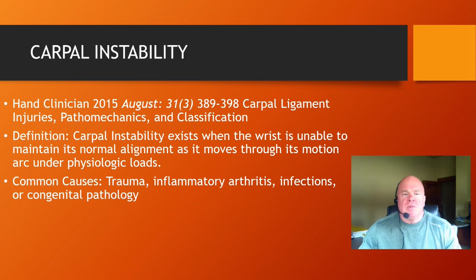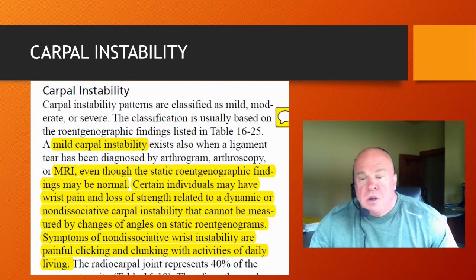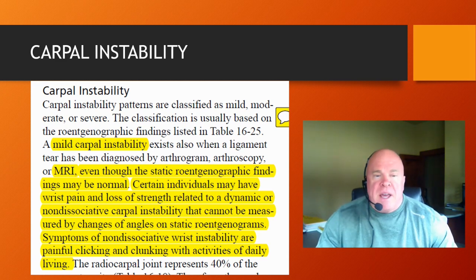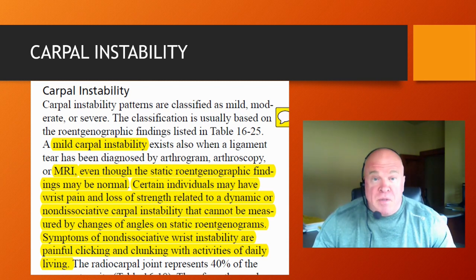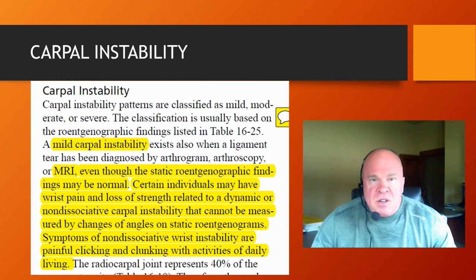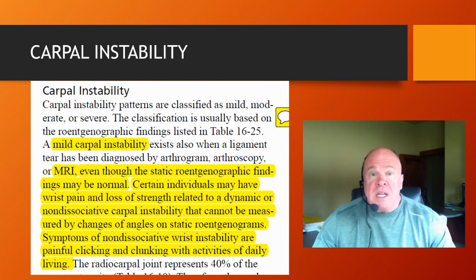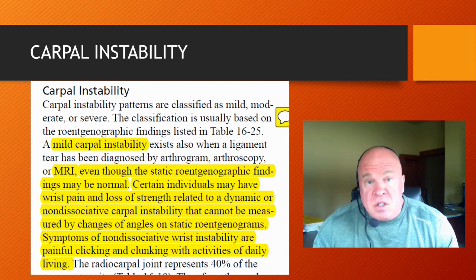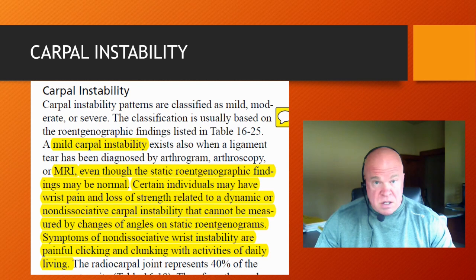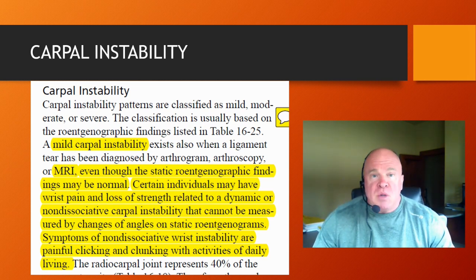Now let's see what the AMA Guides have to say about carpal instability. The AMA Guides are quite brief in their discussion of carpal instability, and I have here the entirety of what is printed in the AMA Guides regarding these conditions. The AMA Guides are illustrative in at least one aspect: there are many different classification systems for classifying these different types of ligamentous injuries to the wrist, and the AMA Guides seem to settle on one particular classification system.